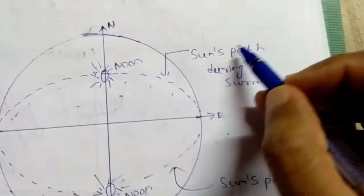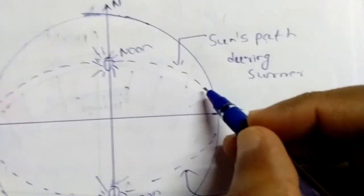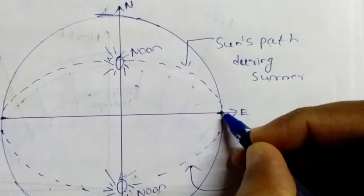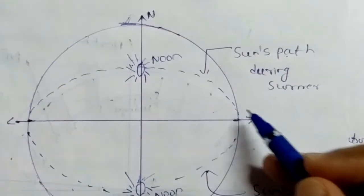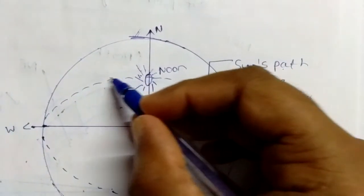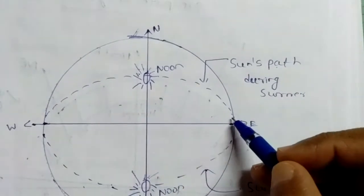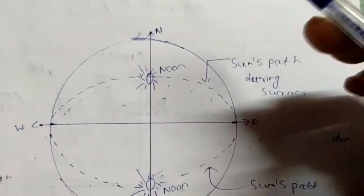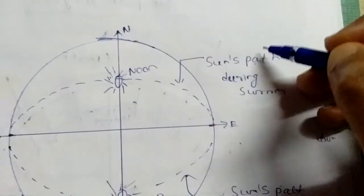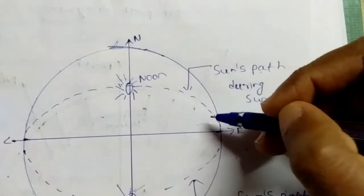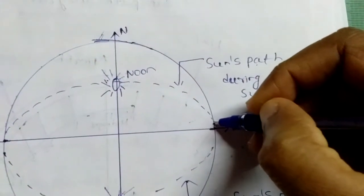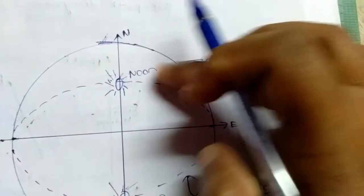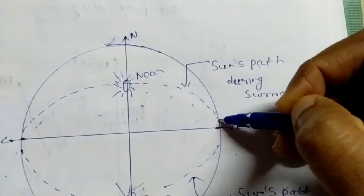For the sun's path during summer, observe the dotted lines on the diagram. The lines are not starting exactly at east and not ending exactly at west. This dotted line represents the sun's path — the direction of travel from rise to set. During summer, the dotted line starts in the northeast region, so the sun rises in the northeast direction.